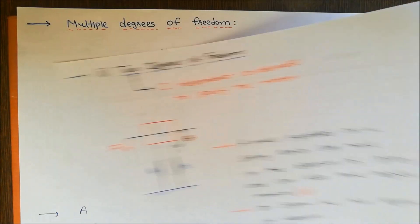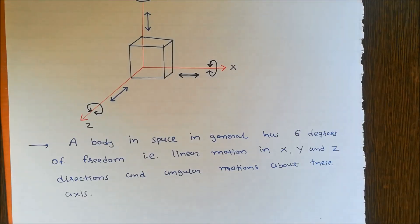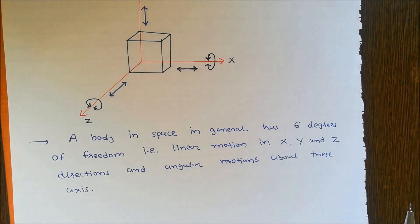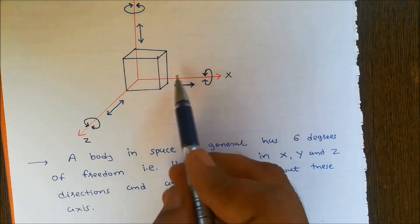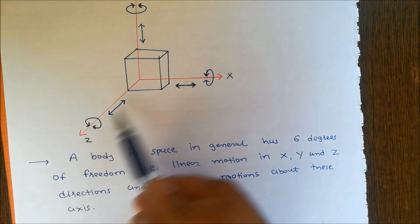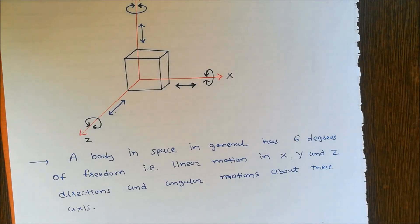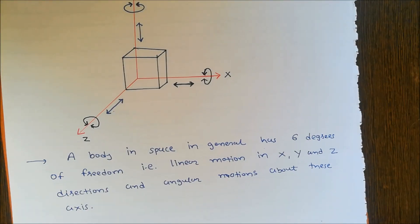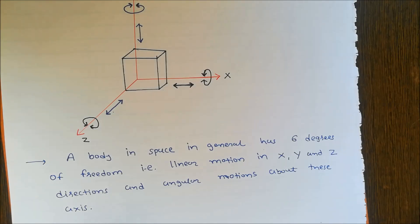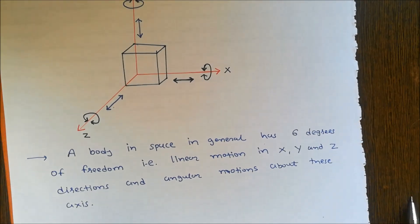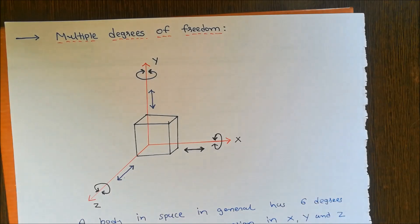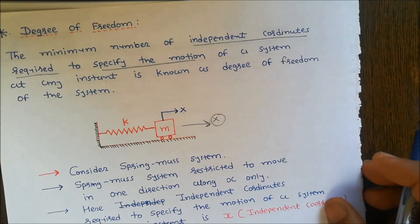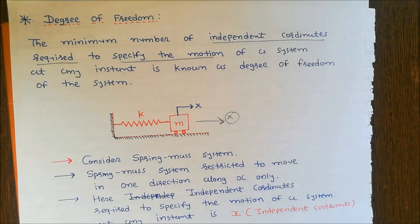Now we take an example of multiple degrees of freedom. We consider one object in space. A body in space in general has six degrees of freedom: three linear motions along the x, y, and z directions, and three angular motions about each of those axes. So the degree of freedom means the minimum number of independent coordinates required to specify the motion of a system at any instant.